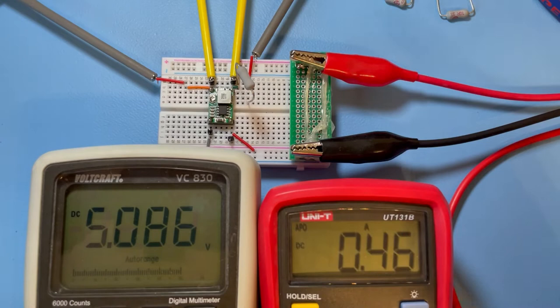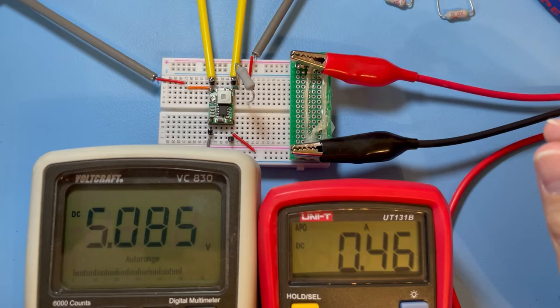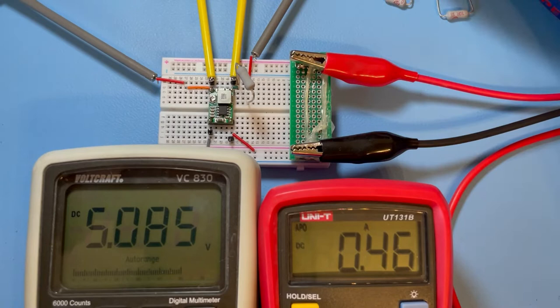But we still, when we started out with 5.089, we lost 0.004, which means 4 millivolts. We lost only at around 460 milliampere.